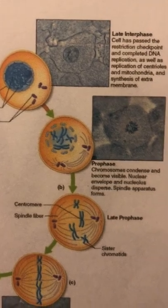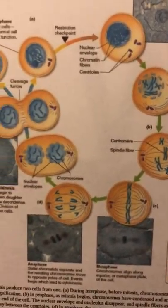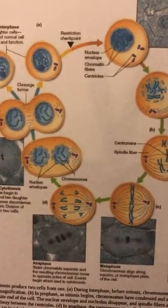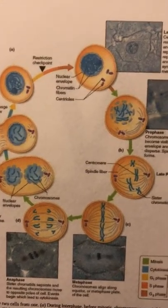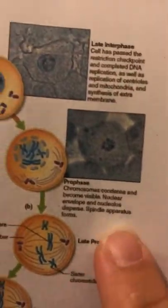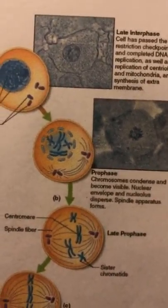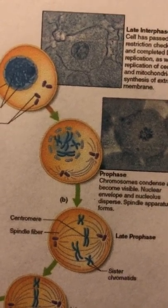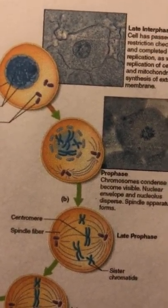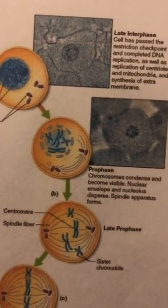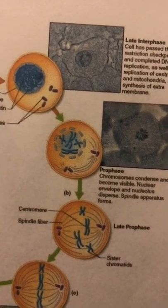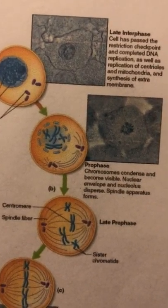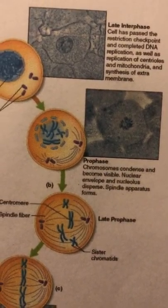Mitosis has four stages: prophase, metaphase, anaphase, and telophase. During prophase, the nucleolus disappears, the chromosomes become visible, and the two pairs of centrioles that were formed during interphase move to opposite sides.